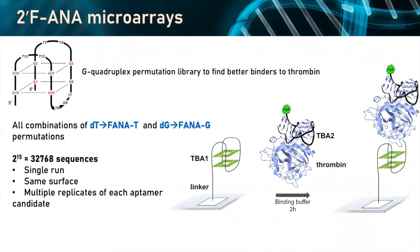To have the entire modification landscape, we would need to do all the possible permutations. The G-quadruplex is made up of T's and G's, so we just have to change all of these T's into FANA and all of these G's into FANA G. The number of possible permutations is 2 to the power of 15, which is 32,000 different sequences. We can synthesize them all in a single run on the same surface with multiple replicates, and then do a single binding assay with fluorescent thrombin to get the entire binding landscape.